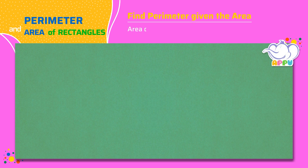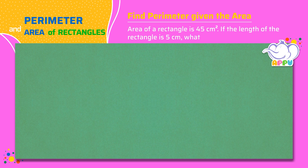Area of a rectangle is 45 square centimeters. If the length of the rectangle is 5 centimeters, what is its perimeter? We first find the other side, which is the width of the rectangle, and then find its perimeter.